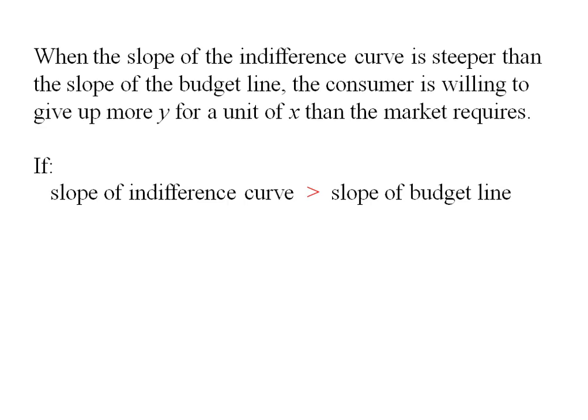So if the slope of the indifference curve exceeds the slope of the budget line, the consumer wants a bundle with more X and less Y. Basically what's going to happen here is they're going to keep wanting more X and less Y. They're going to spend all of their income on X and none of it on Y.